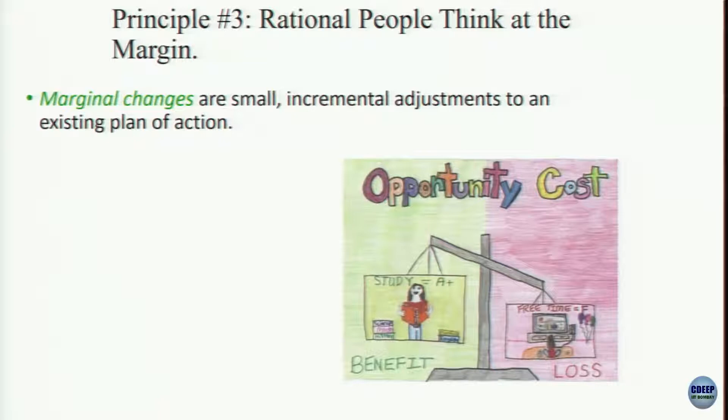Principle number three is that rational people think at the margin. 'Rational people' is the key phrase here. Marginal changes are small, incremental adjustments to an existing plan of action — you weigh your benefits and costs properly before taking decisions. Only if the incremental benefit from spending the incremental cost is higher do you take up that action.